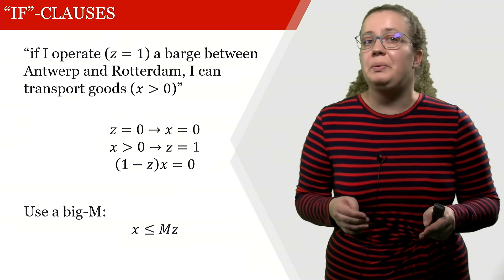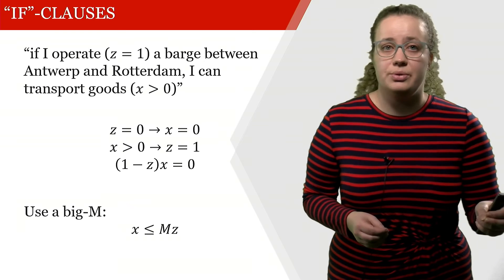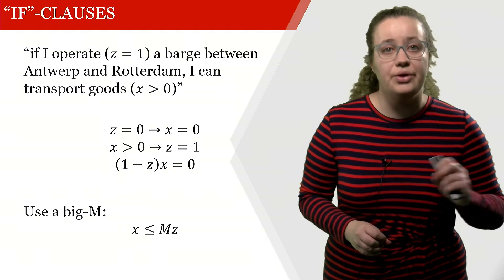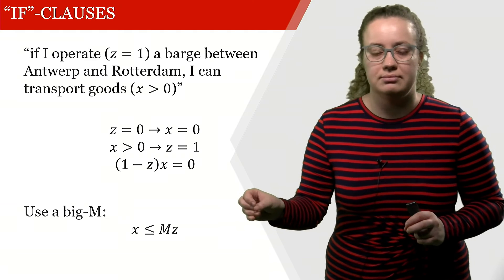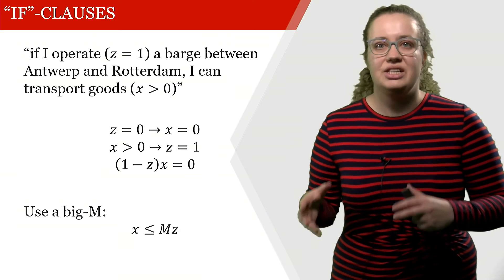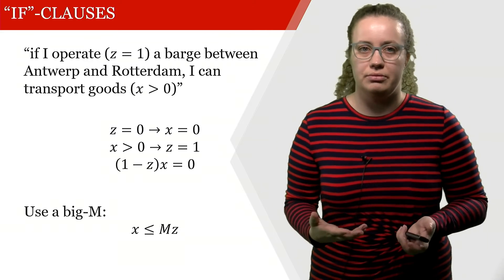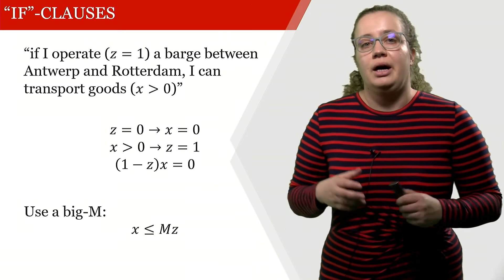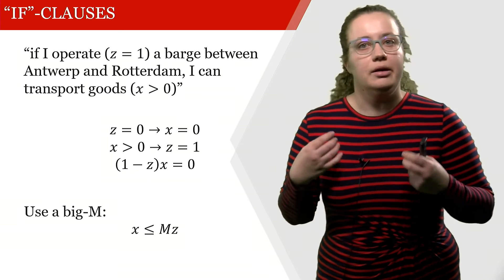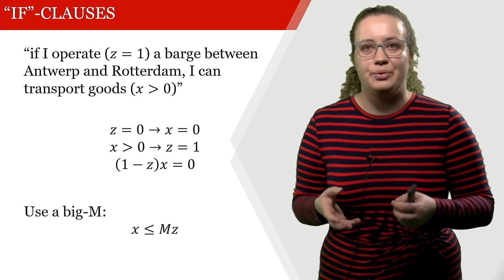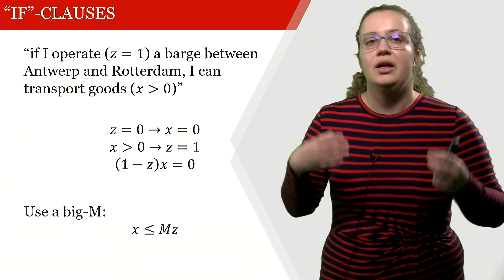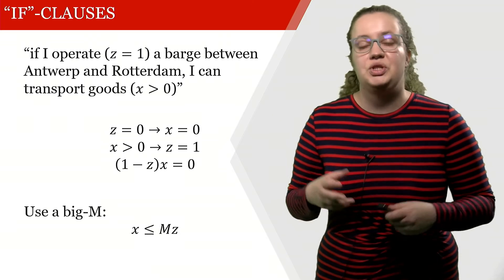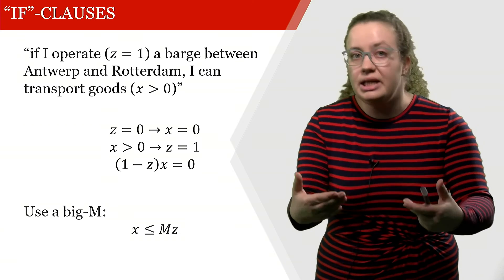What we want to do here is that if our z is 0, then our x is also 0. If our x is greater than 0, then we want that z is 1. Or we want that (1 - z)x is 0. However, the latter constraint is very clearly not linear because we're multiplying two variables. The upper two are also not linear because we have this implication.